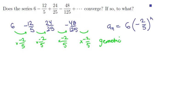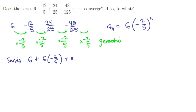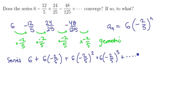Let's rewrite the series in this new compact notation. Our series takes the form of 6, plus 6 times negative two-fifths to the first power, plus 6 times negative two-fifths to the second power, plus 6 times negative two-fifths to the third power, and so on.